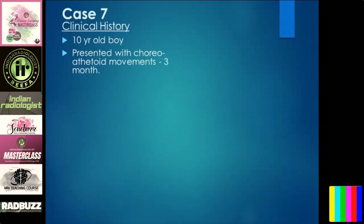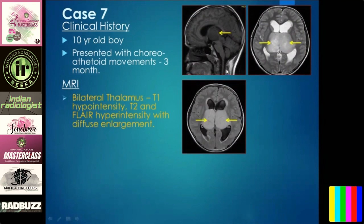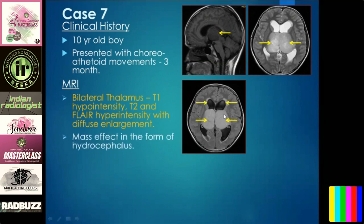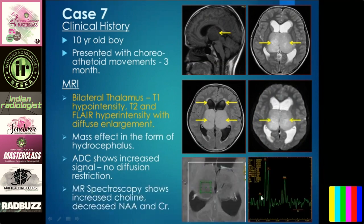Case seven: a 10-year-old boy with choreoathetoid movements for three months. MR imaging shows bilateral thalami that are T1 hypointense and T2 and FLAIR hyperintense, but with diffuse enlargement. Diffuse enlargement with T2 hyperintensity should always raise suspicion for malignancy. Unlike infarct or thrombosis, here you see mass effect causing hydrocephalus. ADC shows increased signal — no diffusion restriction.